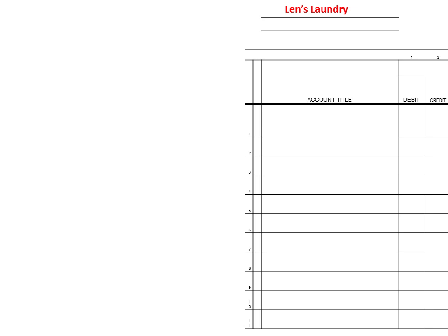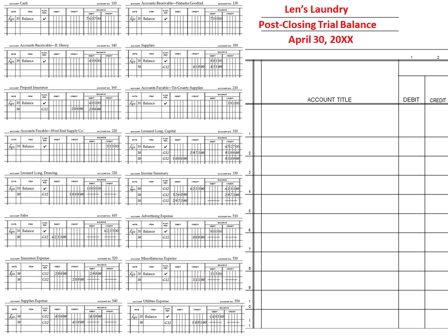So we're going to prepare it, and once again we do who — in this case it's Lend Laundry — what, it's post-closing trial balance, and when, April 30th. All we're going to do is take the information from our ledger and transfer it over. You will see on the post-closing trial balance there is a debit and credit side, a little different from the balance sheet and income statement where they didn't have them, because we want to make sure that our assets equal our liabilities plus owner's equity and our debits equal our credits.